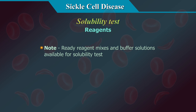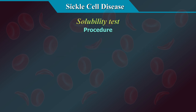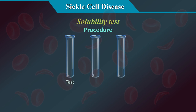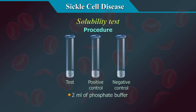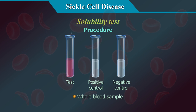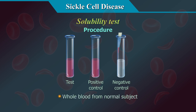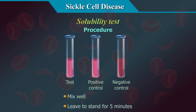Note: many ready reagent mixes and buffer solutions are available in the market for the solubility test. Procedure: take 3 test tubes marked test, positive control, and negative control. Add 2 ml of phosphate buffer to all 3 tubes and allow to reach room temperature. Add 20 µl of whole blood from the patient sample to the test tube, 20 µl from a known sickle cell trait to the positive control, and 20 µl from a normal subject to the negative control. Mix well and leave to stand for 5 minutes.